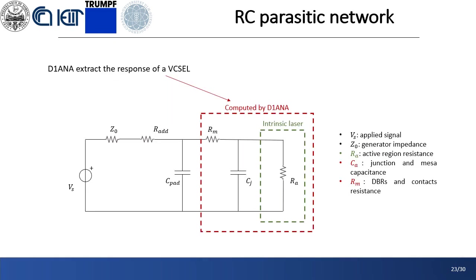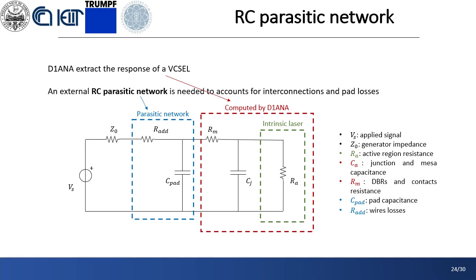Before presenting the results concerning the VCSEL bandwidth, it is worth understanding how it is determined. In particular, as any diode laser, a VCSEL is characterized by an intrinsic laser response and an extrinsic parasitic response. In our physics-based approach, the equivalent intrinsic laser impedance is computed together with the resistance modeling the losses due to the contacts and the DBR, and the capacitance due to the diode junction, the oxide capacitance, and the mesa capacitance. What is missing in the ANA is an external parasitic RC network introduced by the pad capacitance between signal and ground from probe tips to the metal contacts, and by the pad resistance accounting for the pad and wire losses. This external network behaves as a single-pole low-pass filter and it is a limiting factor for a VCSEL bandwidth.